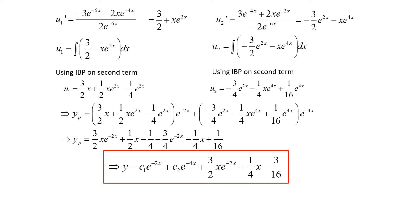You might notice that the solution has left out the -(3/4)e^(-2x) term from yp. The reason is that this term takes the same form as c1·e^(-2x) in our complementary function, so we can absorb that -(3/4) into the unknown coefficient c1 and nothing changes. If you left -(3/4)e^(-2x) in your answer that's correct too, but it simplifies things to combine it with the arbitrary constant.